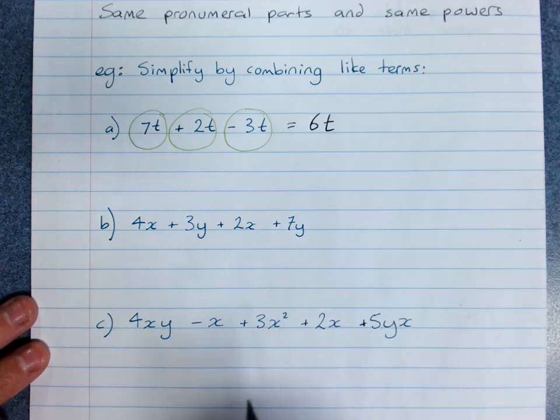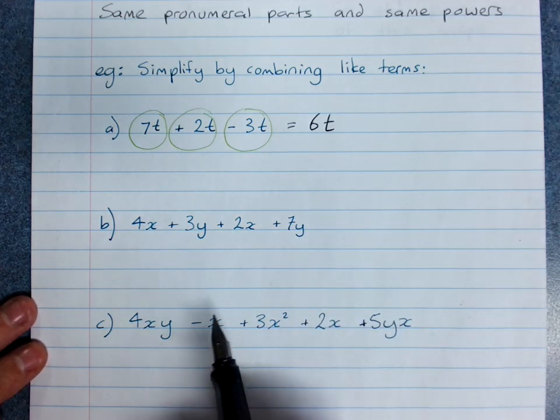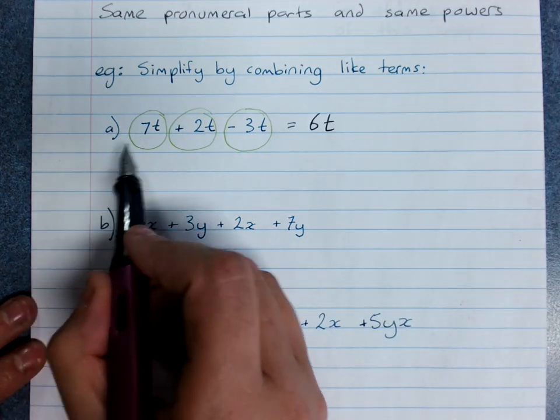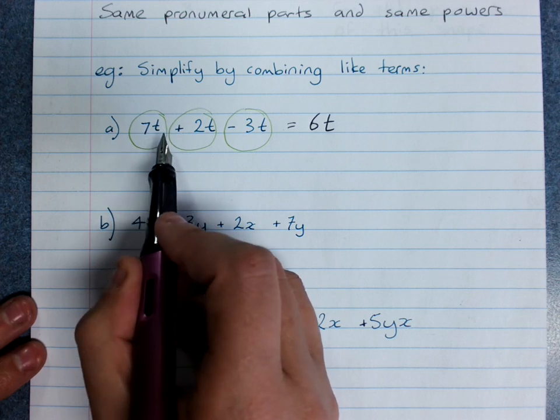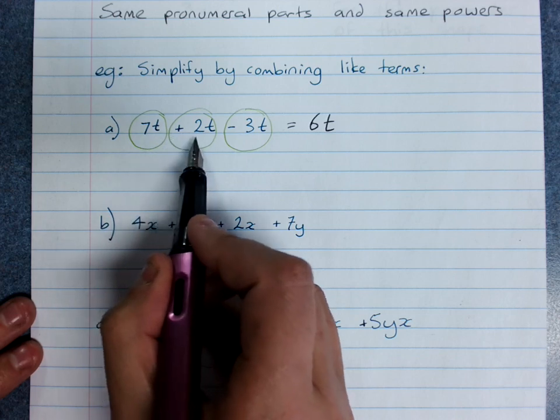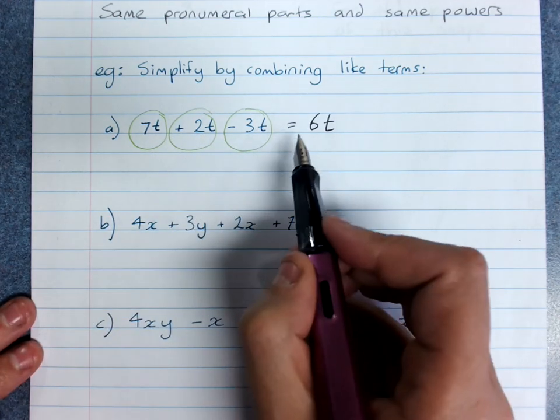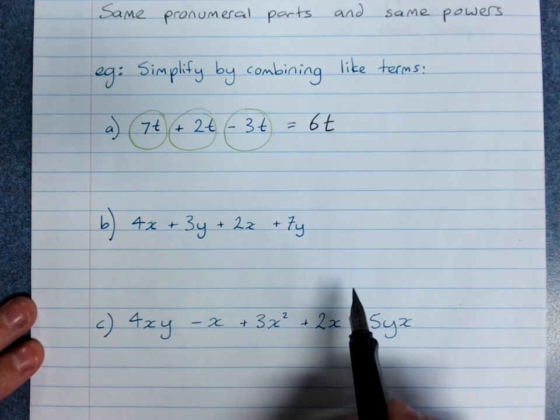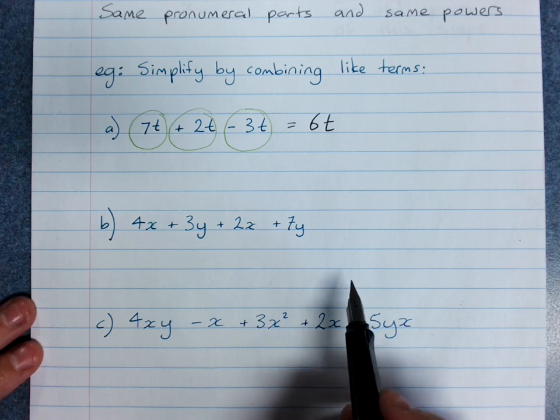When you're adding and subtracting, one of the best things you can do if you're a little bit confused is make that an animal. t is now a tortoise. 7 tortoises plus 2 tortoises minus 3 tortoises equals 6 tortoises. That's all we're doing - we're counting lots of t.